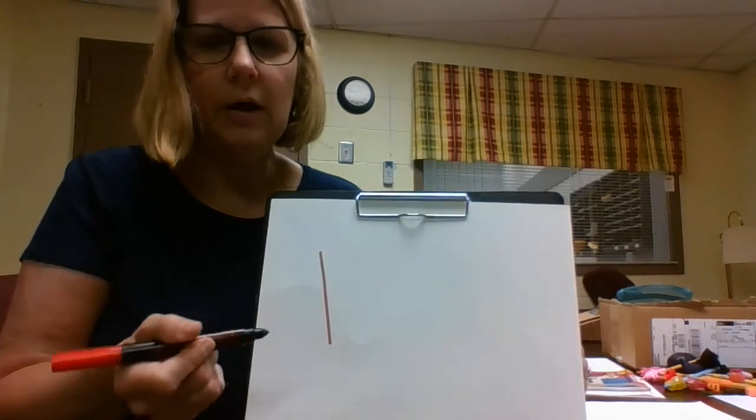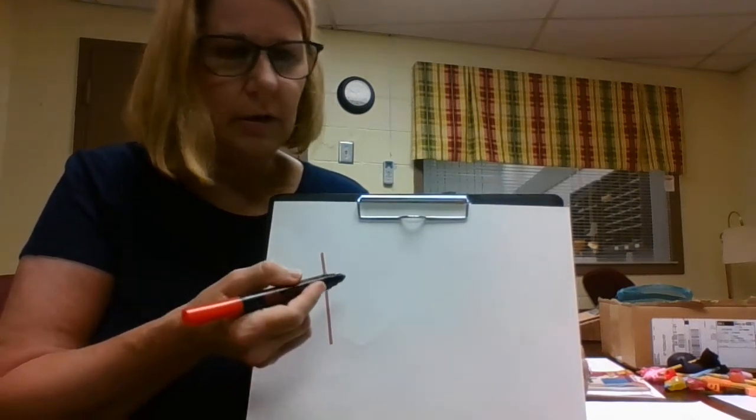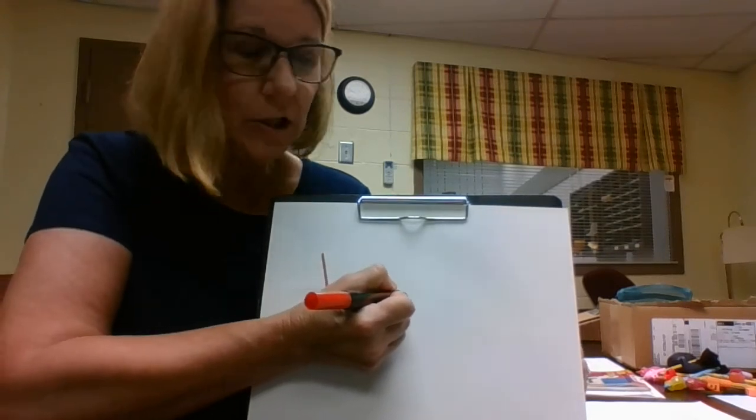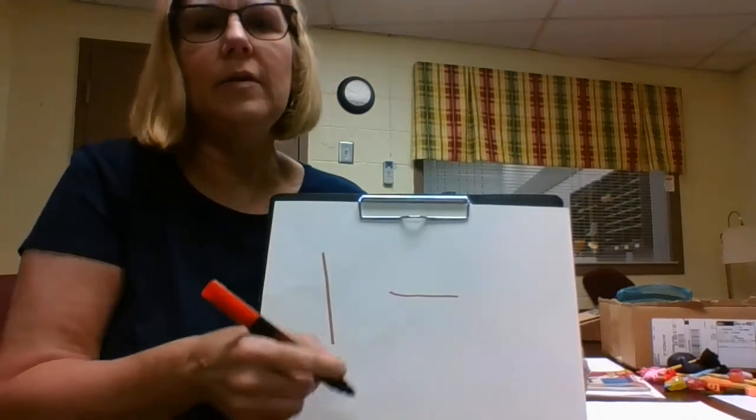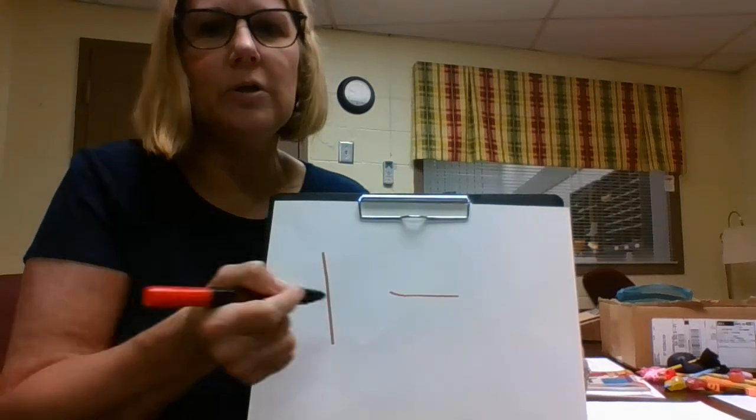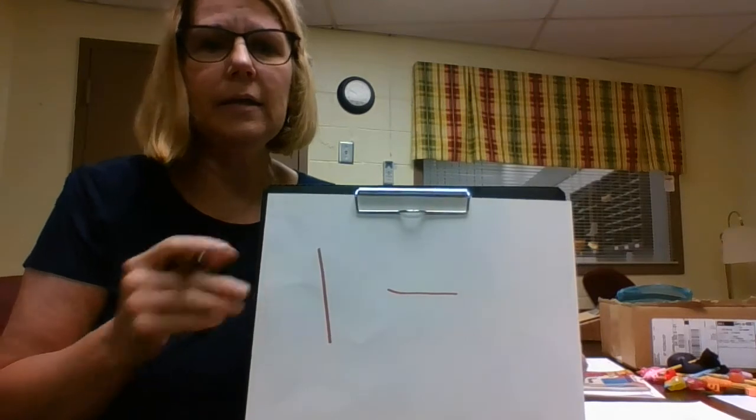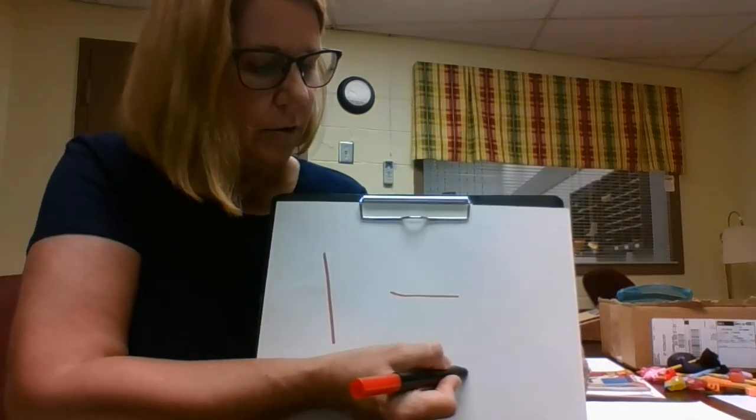Also the same way with across for a horizontal line. Just have them see you draw it, say 'across,' and then that way they'll know, get the verbal cue along with the motion. And then say for a letter E, you can say 'across.'